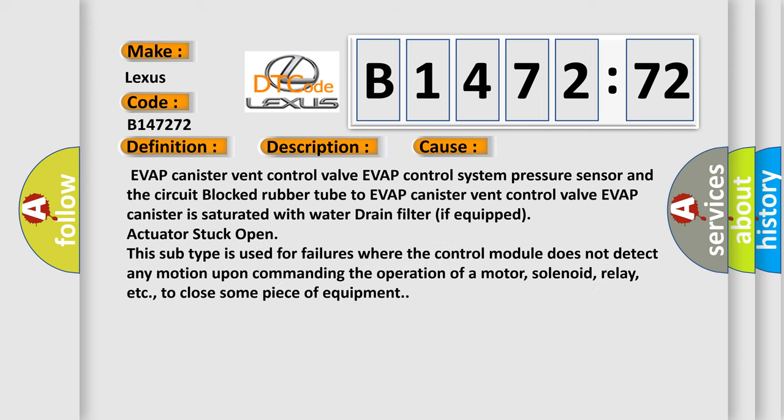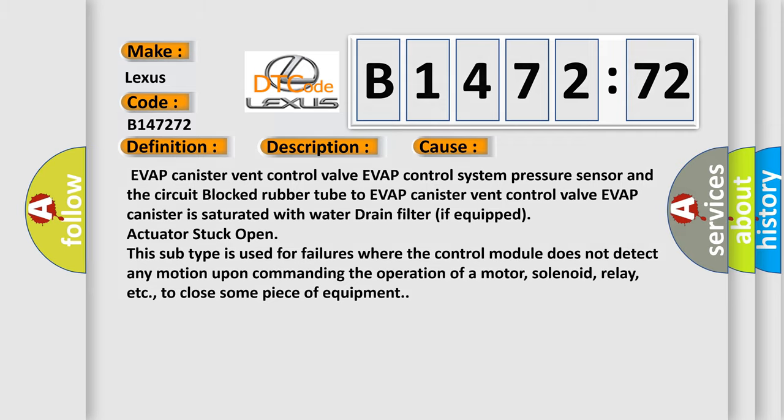This diagnostic error occurs most often in these cases: EVAP canister vent control valve, EVAP control system pressure sensor and the circuit-blocked rubber tube to EVAP canister vent control valve, EVAP canister is saturated with water drain filter if equipped, actuator stuck open. This subtype is used for failures where the control module does not detect any motion upon commanding the operation of a motor, solenoid, relay, etc., to close some piece of equipment.